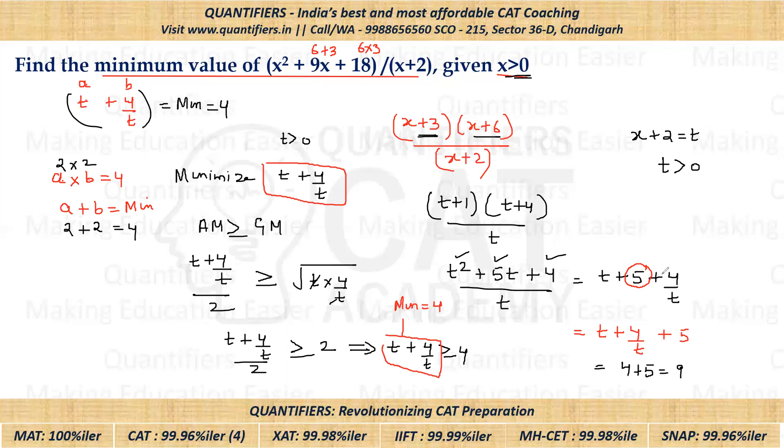Finally, we had to find the minimum value of this expression. So T + 4/T we got as 4, plus 5, and 9 is the final answer. Students, so I have told you both the methods. It is not necessary you have to apply AM-GM here, but even if you apply AM-GM, that is also perfectly fine. I hope everyone has understood it. Thank you everyone.